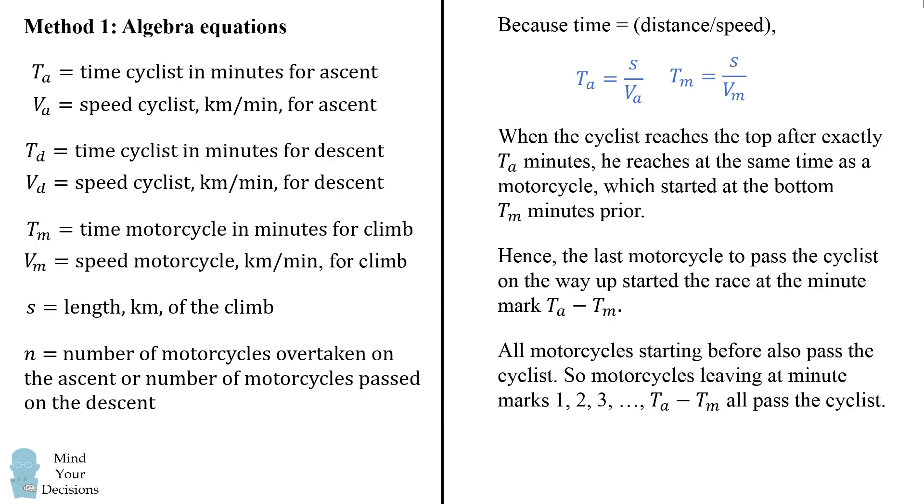All motorcycles starting before this time also passed the cyclist. So motorcycles leaving at minute marks 1, 2, 3, and all the way to ta minus tm all passed the cyclist. So we can conclude n is equal to ta minus tm.